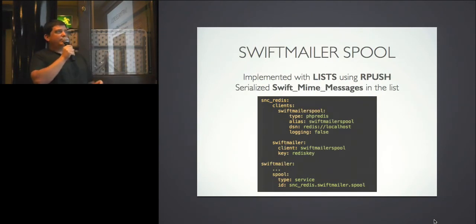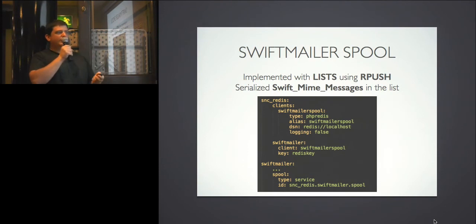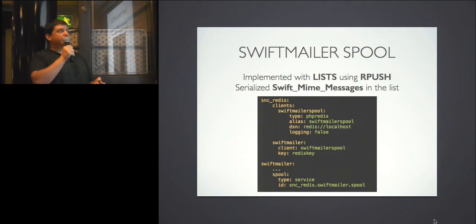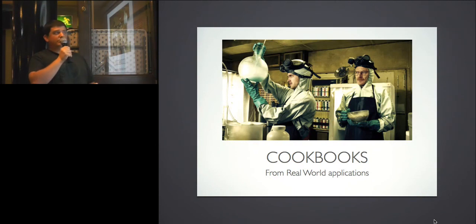Finally, there's a SwiftMailer implementation. If you don't know SwiftMailer's spooling — if a request sends three or four emails, they get put into a spool and sent all at the end of the request, or with some CLI process. The configuration is very similar: a swiftmailer key, specify the client, the Redis key, and in SwiftMailer config you define the spool to use the snc_redis spool. If you inspect Redis you'll see SwiftMailer messages serialized in a list.